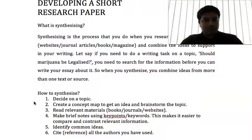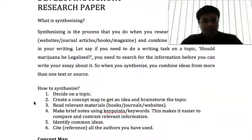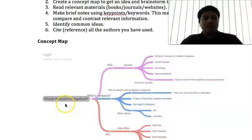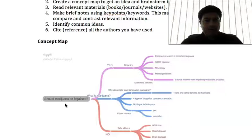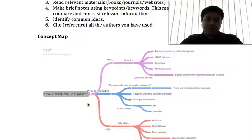You do not go to the internet yet, but based on your understanding, what do you think about the topic? What can you write about it? A concept map is basically a mind map. For example, let's say your topic is 'Should marijuana be legalized?' You put your ideas on a mind map — what you are going to write about this topic. If it is a group discussion, you can come out with a mind map with ideas and opinions from your group members.